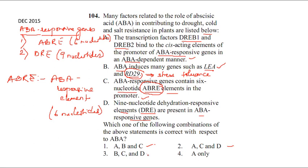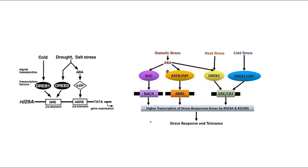In this paper, whoever marked one, two, or three among these options received full marks. ABA is also activating RD29.